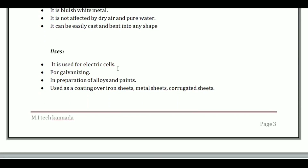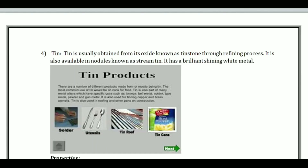Zinc is used for electrical cables and electrical cells, galvanizing process, preparation of alloys and paints, manufacturing of dry batteries, roof cladding, and as coating over iron sheets and corrugated sheets.